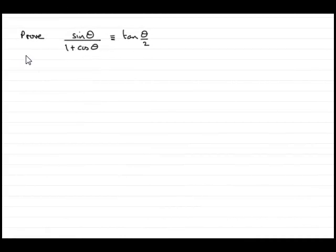Okay, so in this example what we've got to do is prove that sine theta all divided by 1 plus cos theta is identical to tan of half theta or theta over 2.